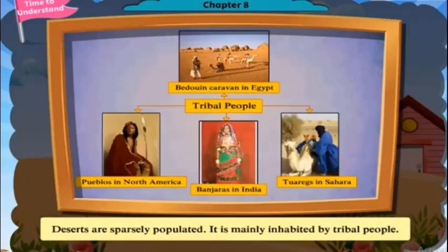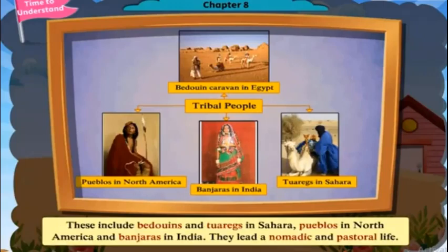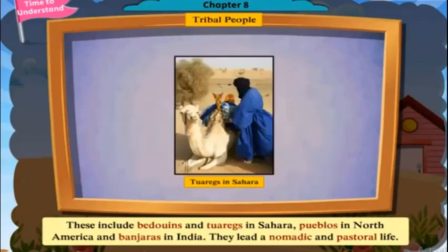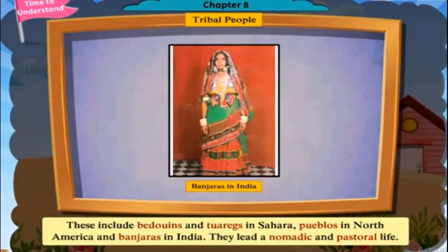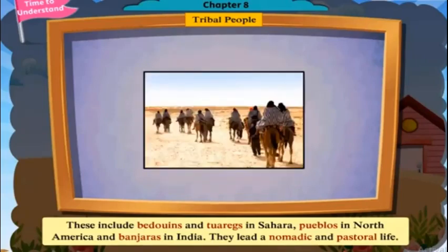Deserts are sparsely populated and mainly inhabited by tribal people. These include Bedouins and Tuaregs in Sahara, Pueblos in North America, and Banjaras in India. They lead a nomadic and pastoral life.